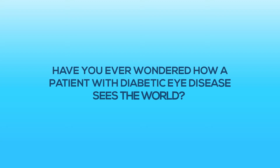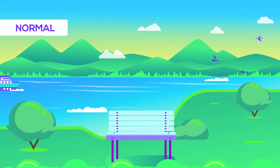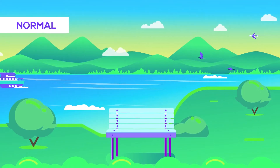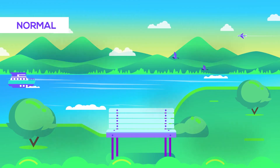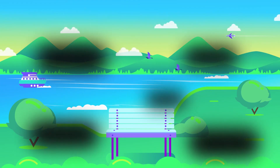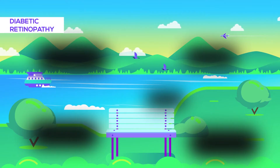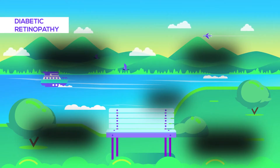Have you ever wondered how a patient with diabetic eye disease sees the world? This is your normal vision. Are you seeing these dark patches in your field of vision? This is due to diabetic retinopathy, a topic we will discuss in this animation.